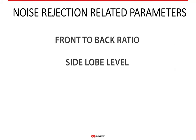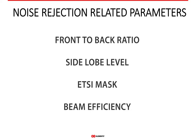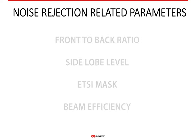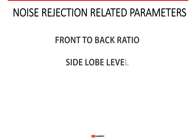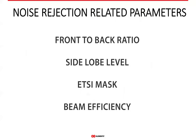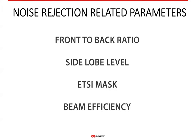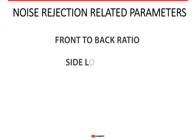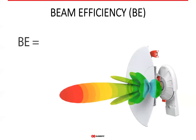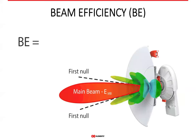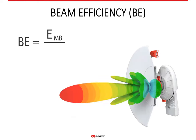The parameters usually thought to express an antenna's ability to deal with interference are front-to-back ratio, side lobe level, or maybe ETSI masks — those you most likely know or at least heard about. The one we at RF Elements believe is the most important in terms of noise suppression is beam efficiency. Beam efficiency is the ratio of the energy contained in the main lobe to the total energy an antenna radiates.